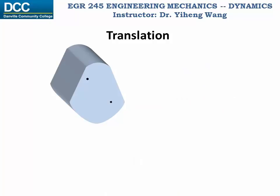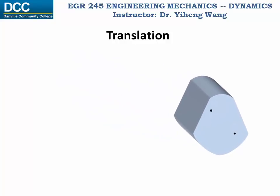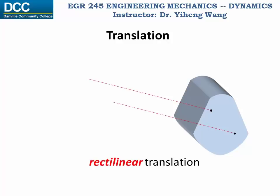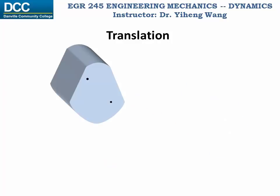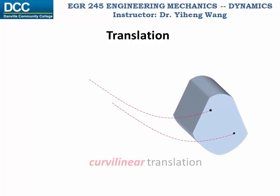During translation, the path could be a straight line, which is called rectilinear translation, or the path could be a curve, and this is known as curvilinear translation. Either way, during translation, for any two points on this rigid body, their paths are identical.